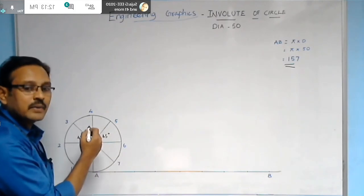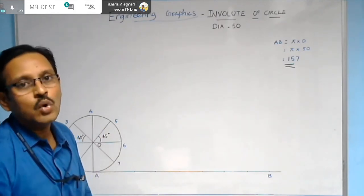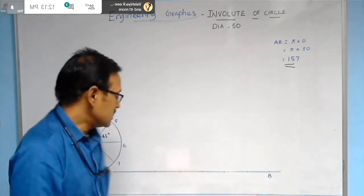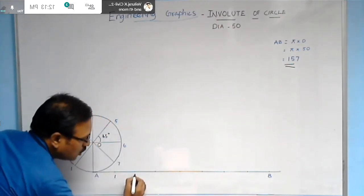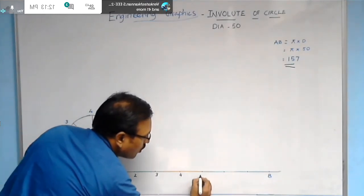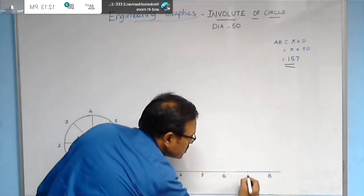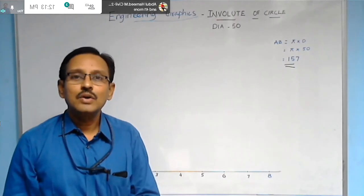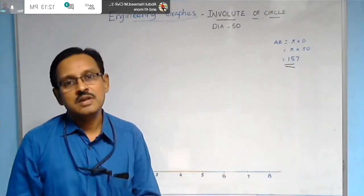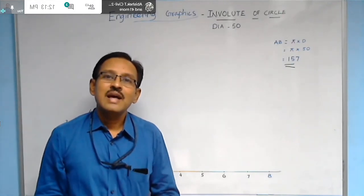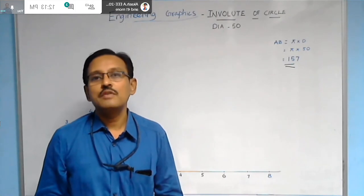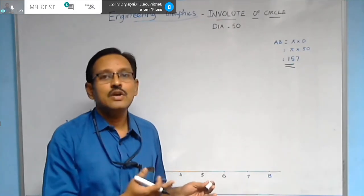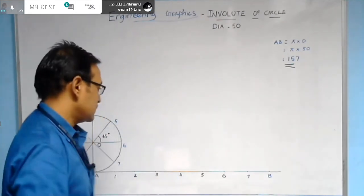Split line AB into 8 equal parts, since the circle has been split into 8 equal parts — label them 1, 2, 3, 4, 5, 6, 7, and 8. The geometric construction procedure for splitting a line into equal parts was explained in our previous lecture on the cycloid.